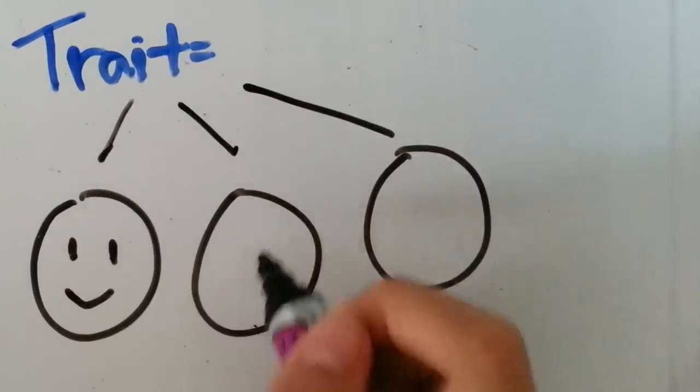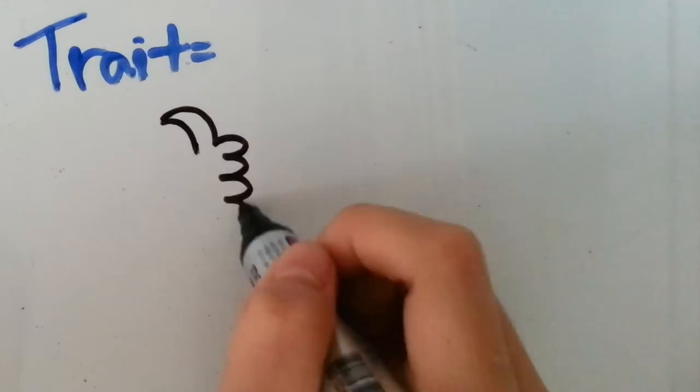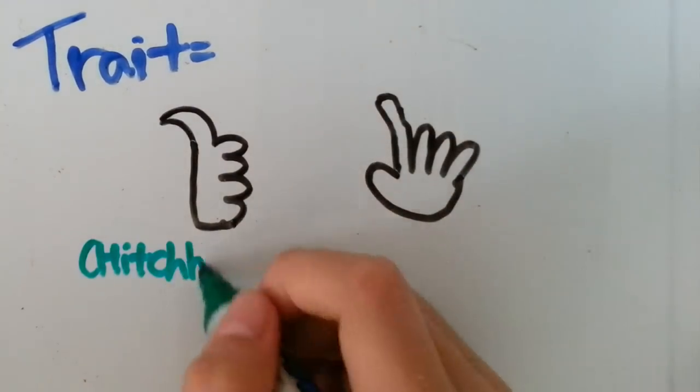A dimple is a trait. A trait is the differentiating quality of features given to an individual. Hitchhiker's thumb and double-jointed fingers are all examples of traits.